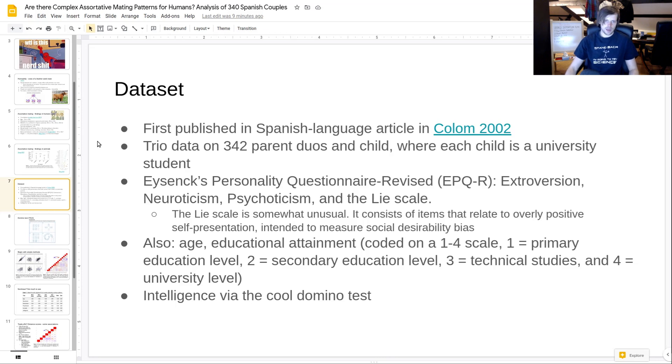What they have is data on 342 parent duos and child, or trios. So we have data on each parent and then the child, and each child is some university student - something like 90% or maybe 95% of them are university students. The remaining is maybe friends, something like maybe snowball sampling. They were given the Eysenck personality questionnaire. It has three major factors. The weird one here is the psychoticism.